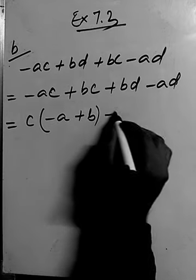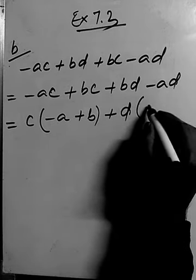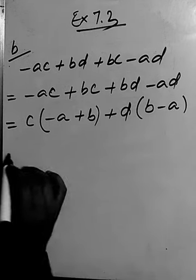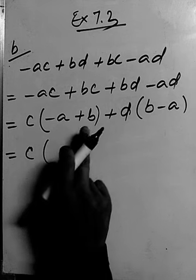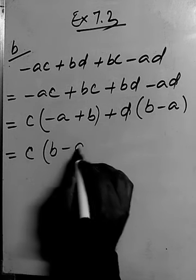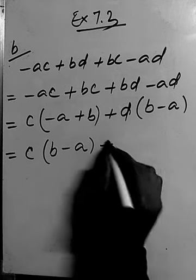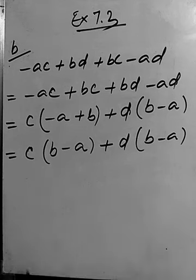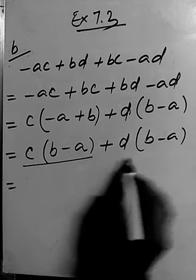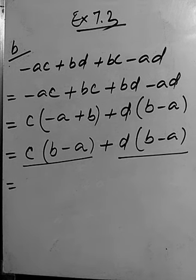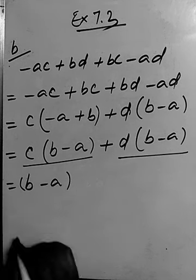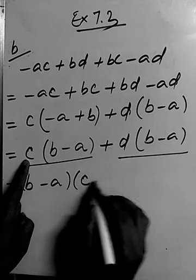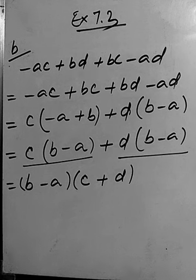Taking C common from the first group gives C(B minus A), and taking D common from the second group gives D(B minus A). Now (B minus A) is common to both parts, so we take it out. The result is (B minus A)(C plus D). That completes our factorization. We'll move to the next question.